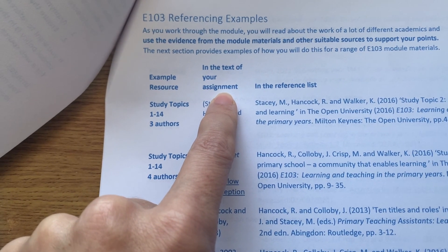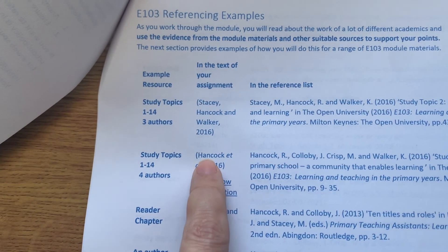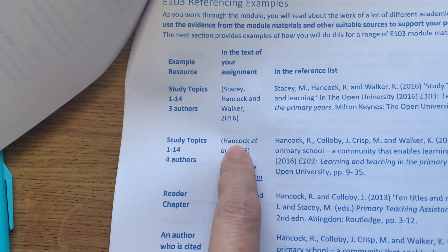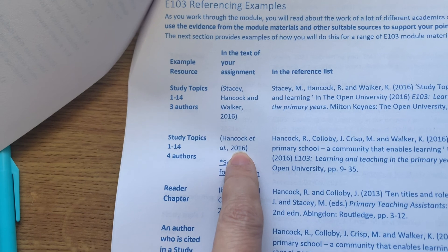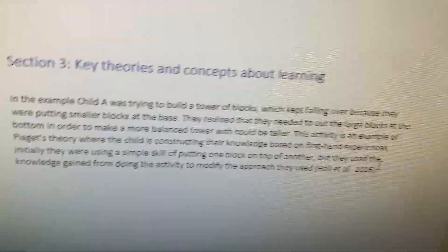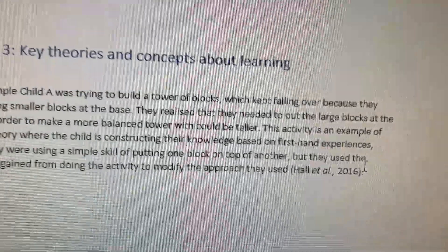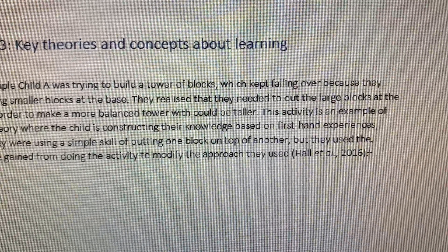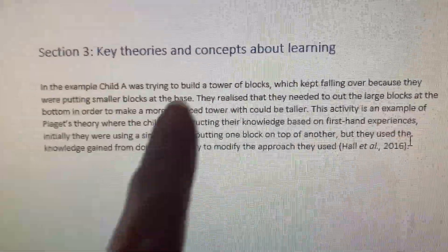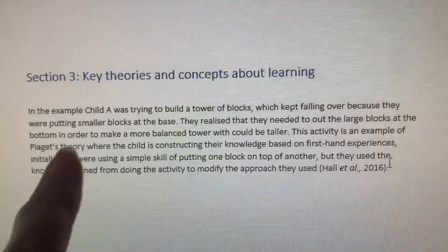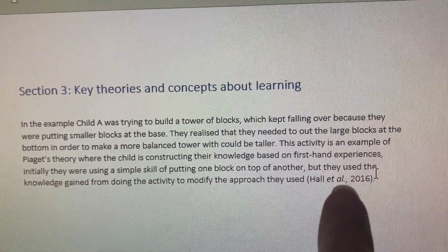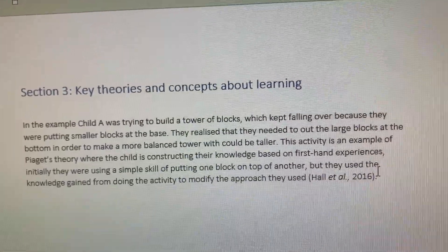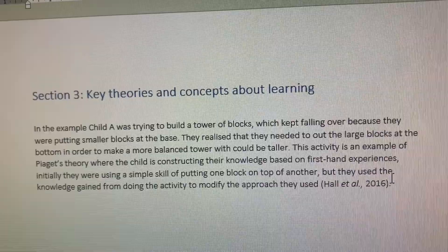I need to put the name of the first author and 'et al' and the publication date. The first author is Kathy Hall, so I'm just going to put her surname and the publication date. If I go back to my work you can see I've done that — at the end of that sentence I've put 'Hall et al' and the publication date. That tells the marker I've used this study topic to get this information. It's as simple as that.